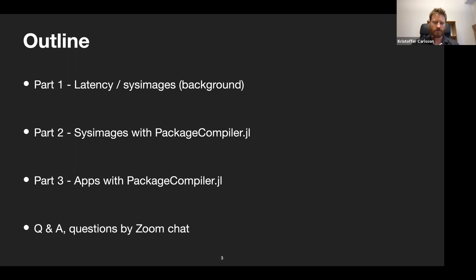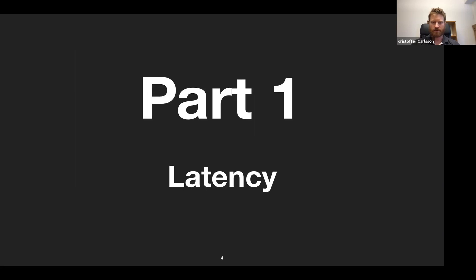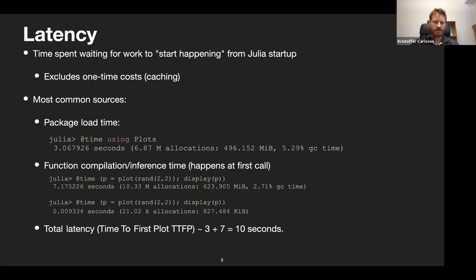Let's start with the first part: latency. We define latency as the time spent waiting for work to start happening from when Julia starts, excluding one-time costs. If we can cache something, that one-time cost is not part of latency. The most common sources are package load time — we start Julia, load some packages, and have to wait. Here I load Plots, it took three seconds. The second part is when we compile functions and run type inference the first time we call a function.